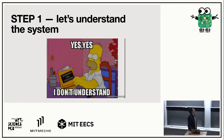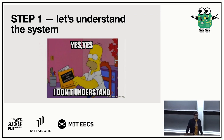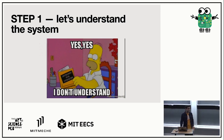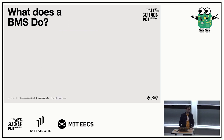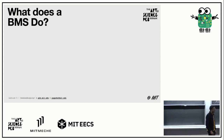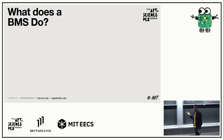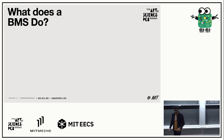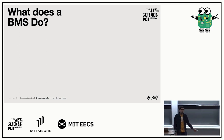Step one in debugging is just understanding your system. People probably know what example I'm going to use because I've used it in about three lectures — we're going to stick with the solar car battery management system because it's actually a very good example. Let's start by understanding the system in a little more detail. What does a BMS have to do?